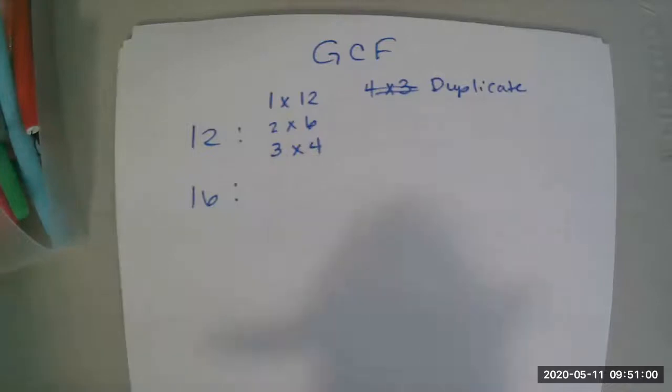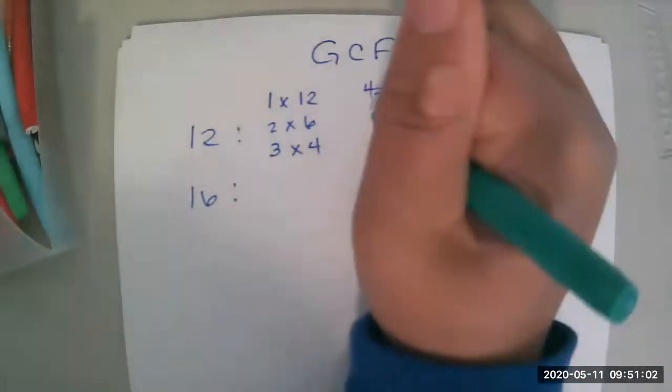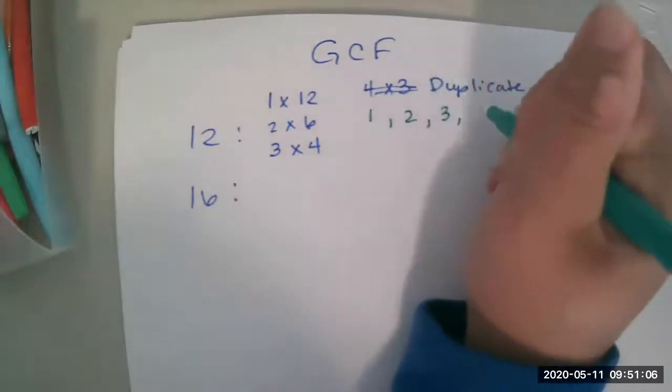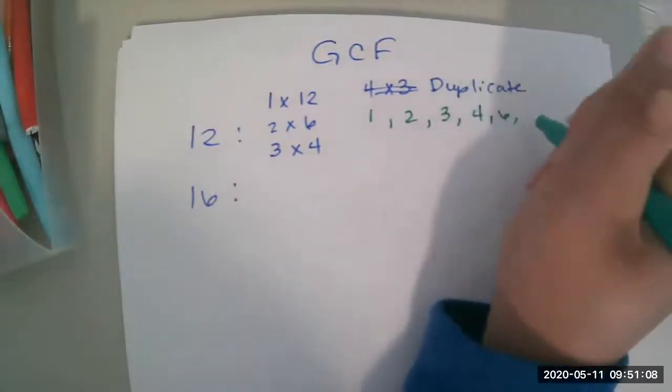So the factors of 12 are, and I'm just going to go ahead and put them in order: 1, 2, 3, 4, 6, and 12.